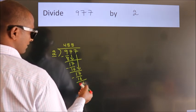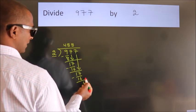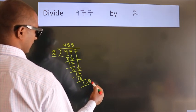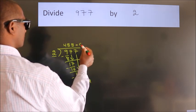After this, no more numbers to bring it down. So we stop here. This is our remainder. This is our quotient.